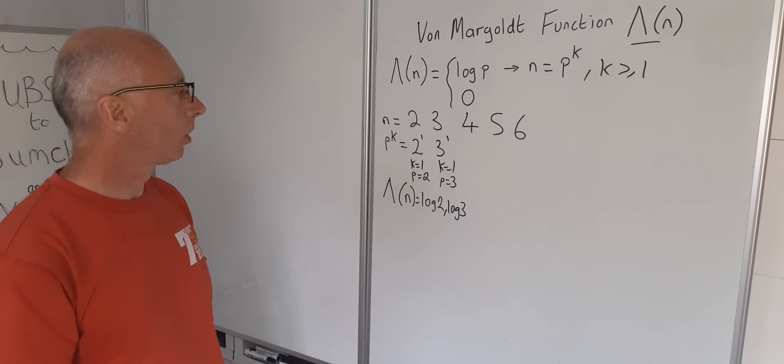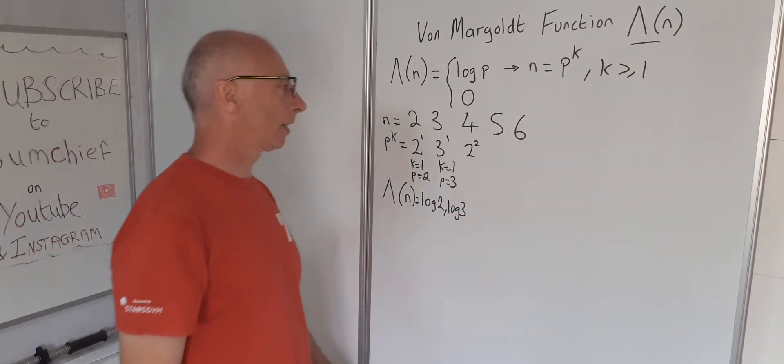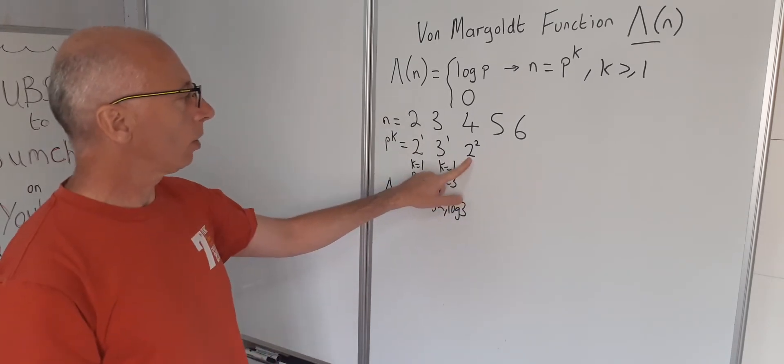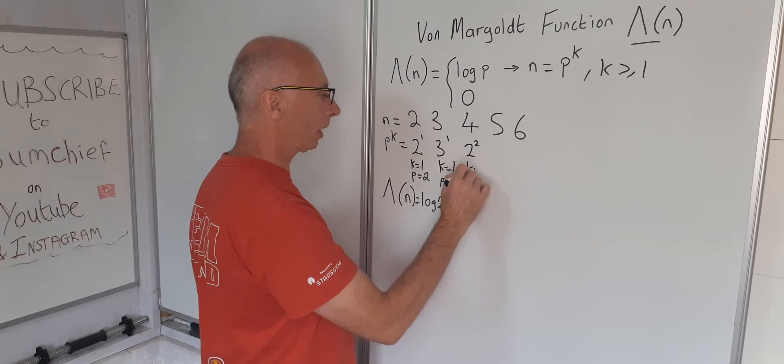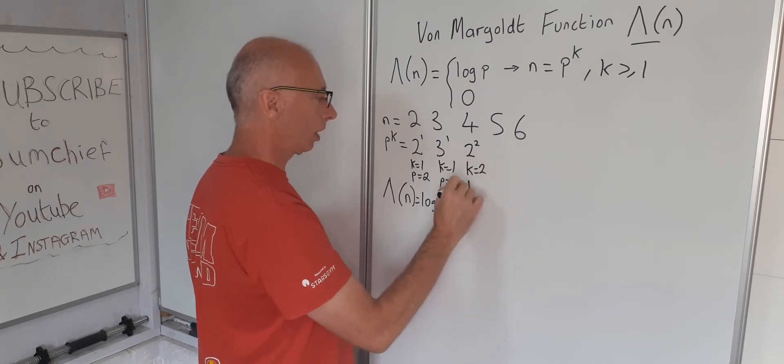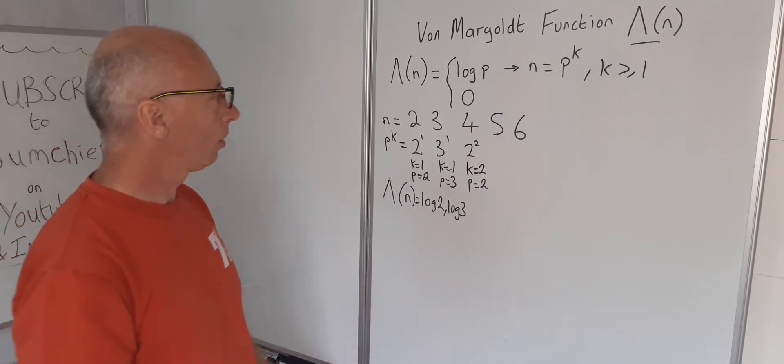The number four. So number four can be made up of two squared. So two squared, two is a prime number and K is equal to two, which is greater than or equal to one. So that's two and the prime number here is two. So therefore for the value of four we've got the log of two.